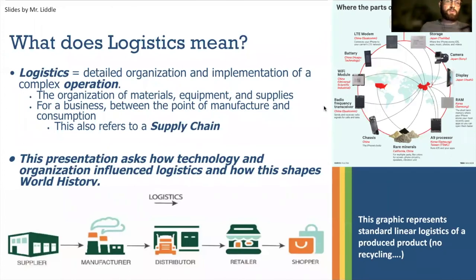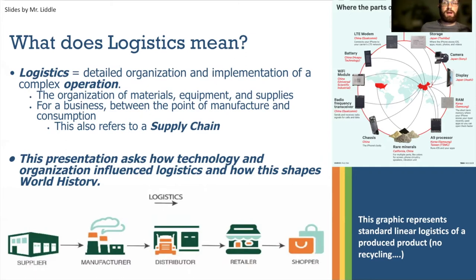Logistics refers to the detailed organization and implementation of a complex operation — one that has more than one step. This includes the organization of materials, equipment, and supplies. In business, it refers to the point between manufacturing a good and its sale for consumption, also sometimes called a supply chain. Think about the smartphone in your pocket — the iPhone is made of parts from many different places, and getting all those together is an incredibly complicated logistical operation.